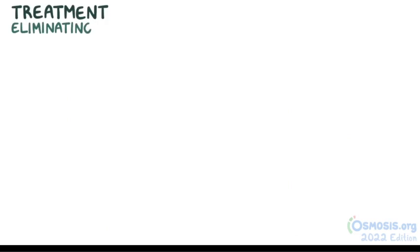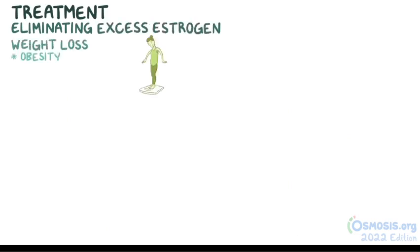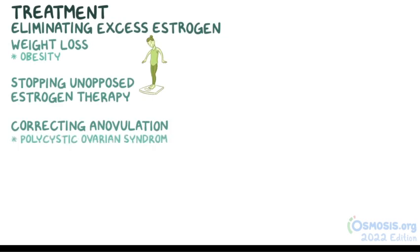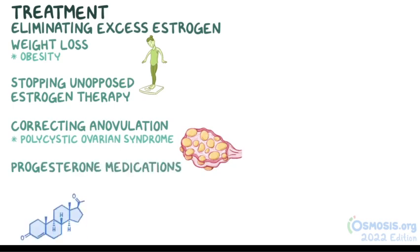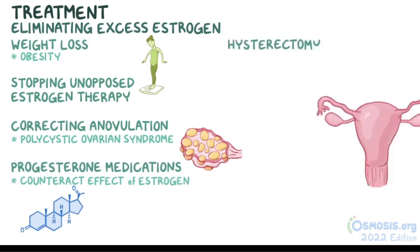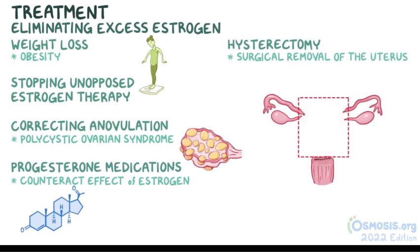Treatment includes eliminating the underlying cause of excess estrogen, such as weight loss in obesity, stopping unopposed estrogen therapy, and correcting anovulation in polycystic ovarian syndrome. Progesterone-containing medications can also be used to counteract the proliferative effect of estrogen. In other cases, hysterectomy — surgical removal of the uterus — may be the only treatment, especially when there is a high risk of progression to endometrial cancer.